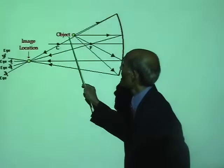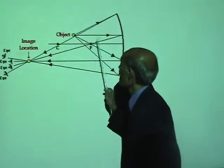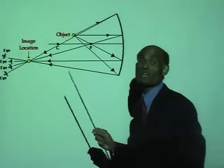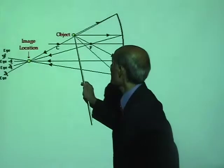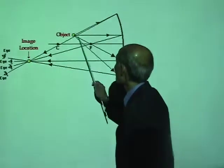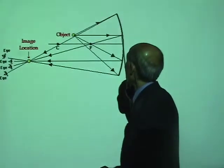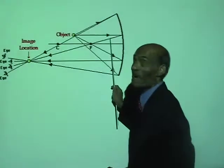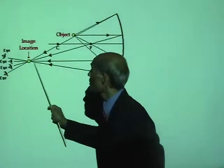Let's now look at the object placed between the center of curvature and the principal focus. How is the image formed? Look at the way I am going to locate the image. I take a ray that goes parallel to the principal axis. This is a ray parallel to the principal axis — after reflection from the mirror, that ray will have to pass through the principal focus.